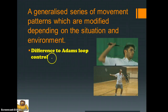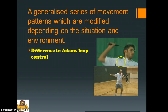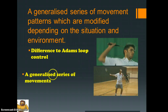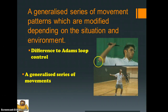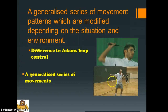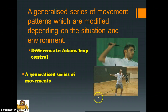For Adams's loop control, he would suggest that we have a motor program for each specific skill, whereas for the schema theory there is a generalized series of movements. Adams would suggest there would be a motor program for playing the shot at the back of the court, the front of the court, and the middle of the court, and similarly for serving from different positions. However, for the schema theory we're looking at a generalized scheme that can be adapted for each position on the court.